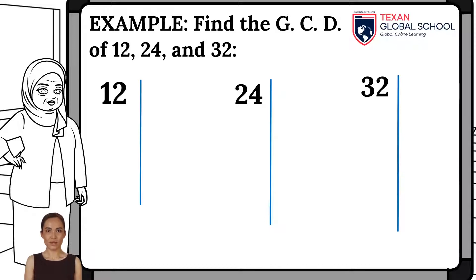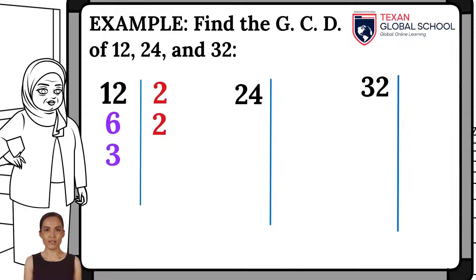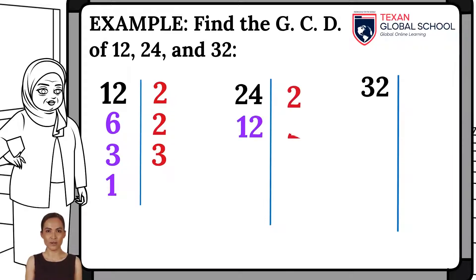The first prime factor of 12 is 2, since 12 divided by 2 is 6. The next prime factor is also 2, since 6 divided by 2 is 3. And the last prime factor is 3, since 3 divided by 3 is 1. The prime factors of 24 are 2, 2, 2, and 3.